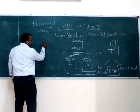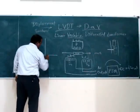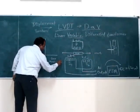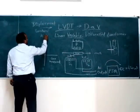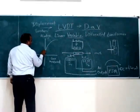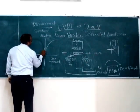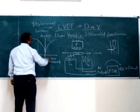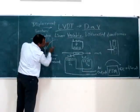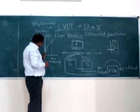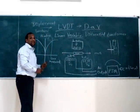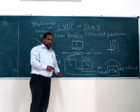Because it is linear, if you look at the graph — core movement versus AC output voltage — the graph will be linear. Depending on the direction of the movement of the core, if it moves in one direction the graph goes one way, and if it moves in the right direction the graph goes the other way. So depending on the direction and displacement of the core, this linear graph is formed.